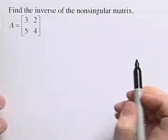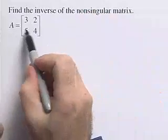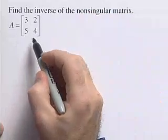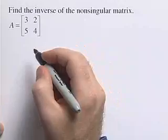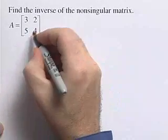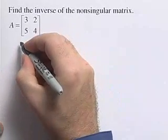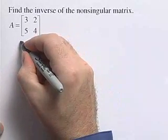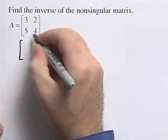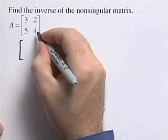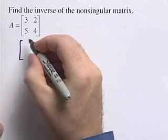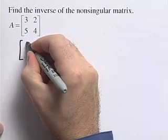For this problem, we're going to find the inverse of a non-singular matrix. We're going to do this algebraically. Here we're given this non-singular matrix A. To find the inverse, we first want to augment this matrix with an appropriate identity matrix. Since we have a 2 by 2 matrix here, we're going to use a 2 by 2 identity matrix.